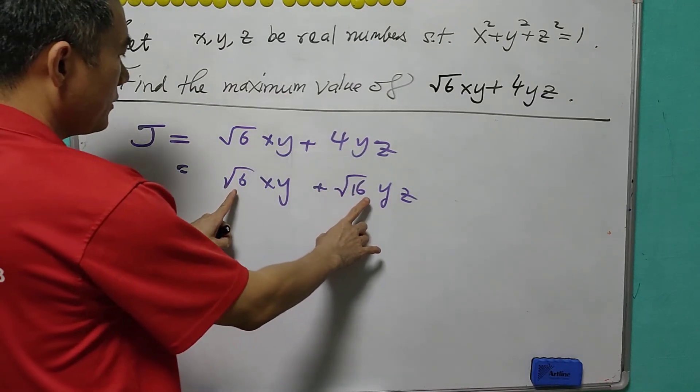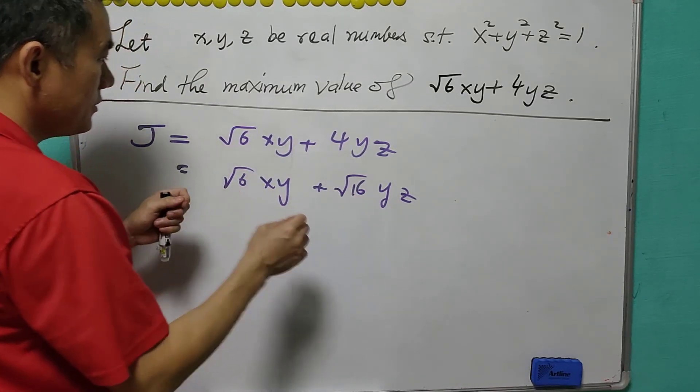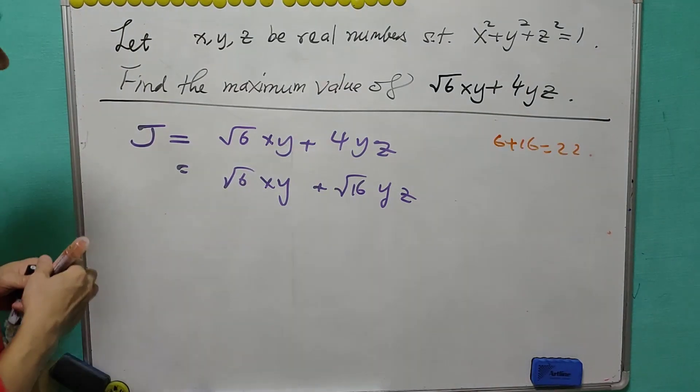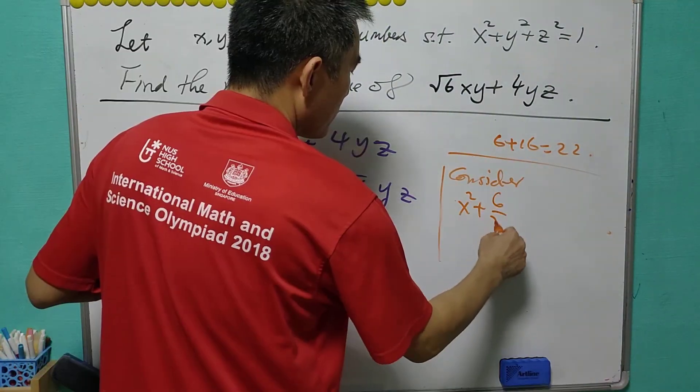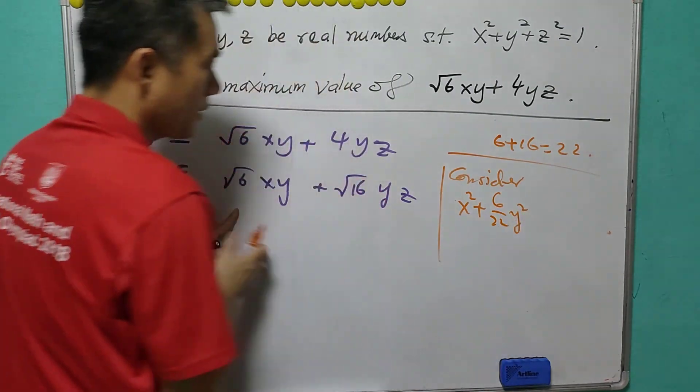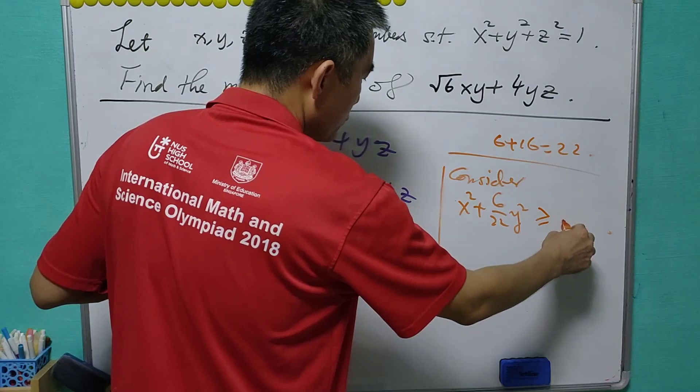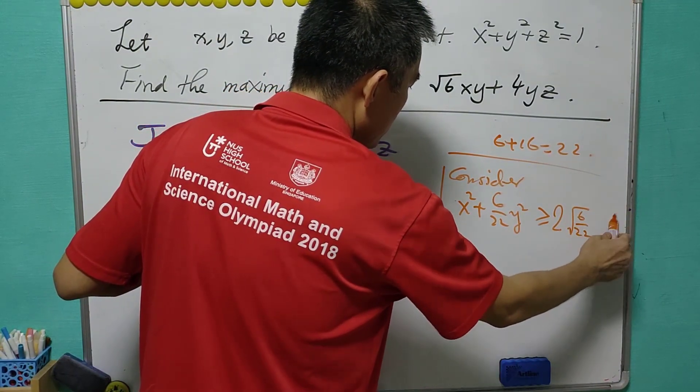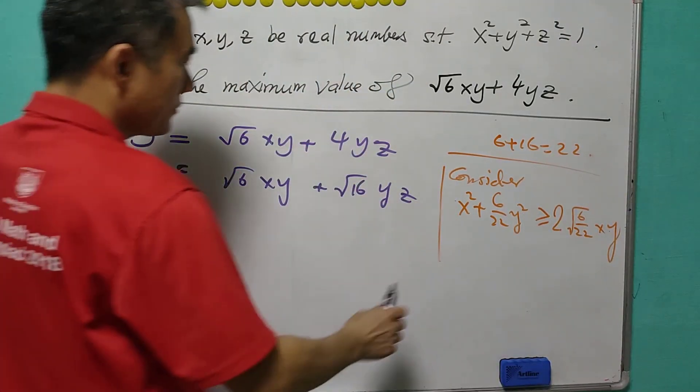Then we know that the sum of 6 and 16 is equal to 22, and it gives us some idea. That is, we consider x² + (6/22)y². Using AM-GM inequality, this will be greater than or equal to double of √(6/22)xy.